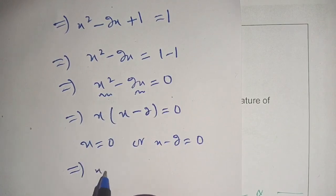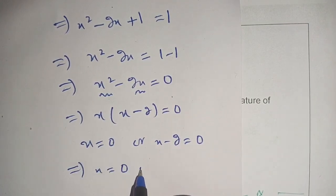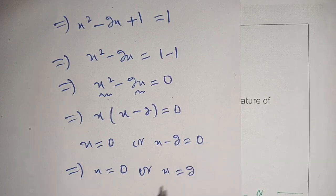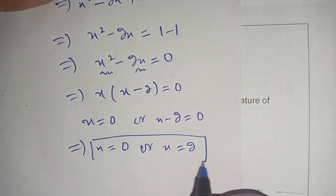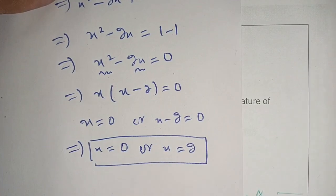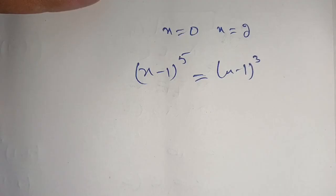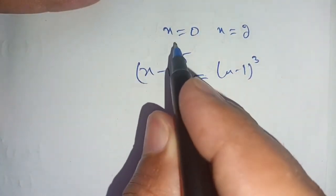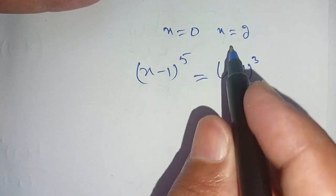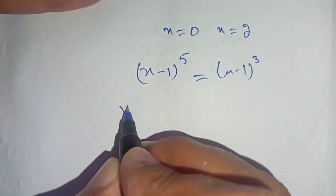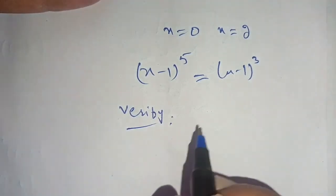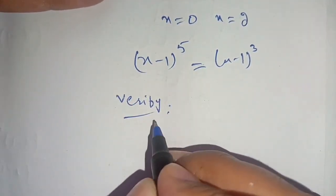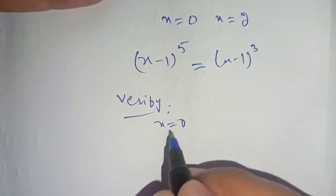Thus the value of x is equal to 0 or x is equal to 2. Our final result is x equals 0 and x equals 2. We now verify whether these values satisfy our original equation.